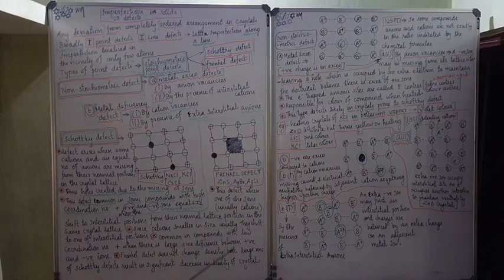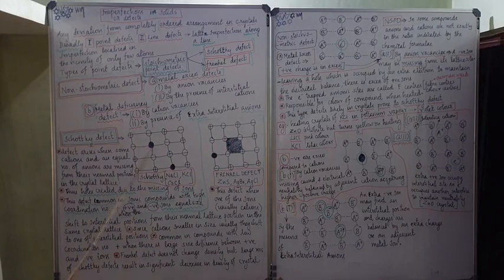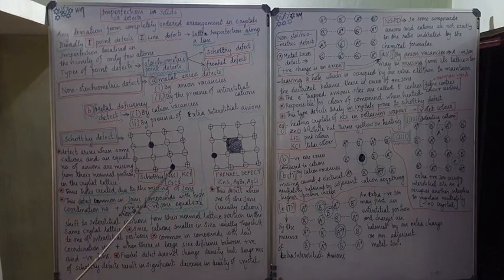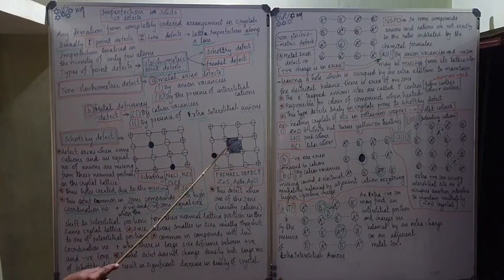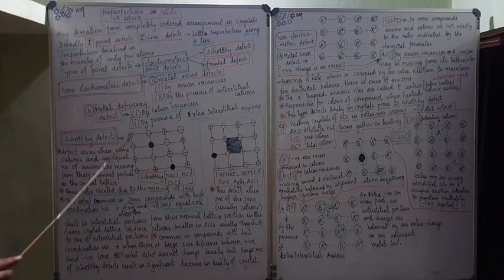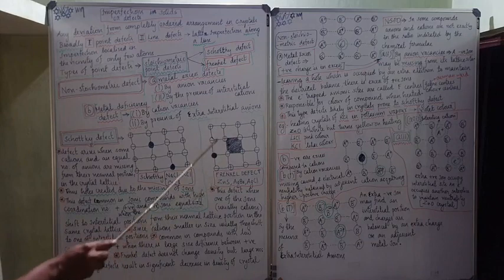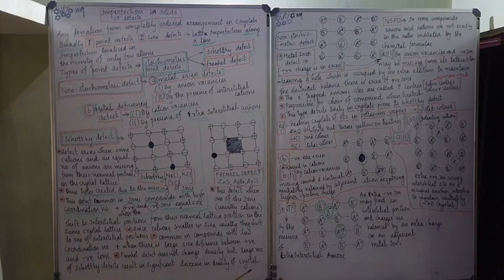An important distinction: Frenkel defect does not change the density of the crystal, because the missing ion is still present inside the interstitial space — so mass does not change. Schottky defect, however, results in a significant decrease in density because ions are truly missing from the crystal, reducing its mass.